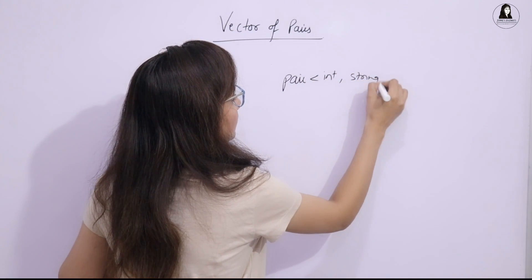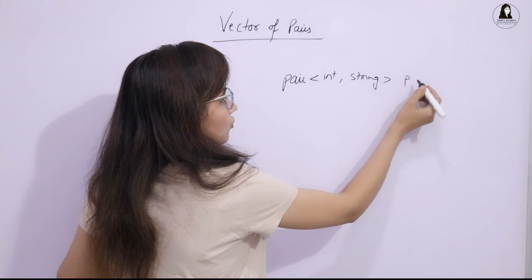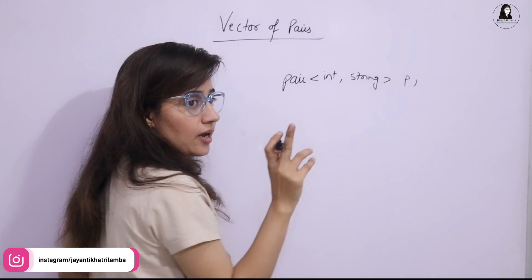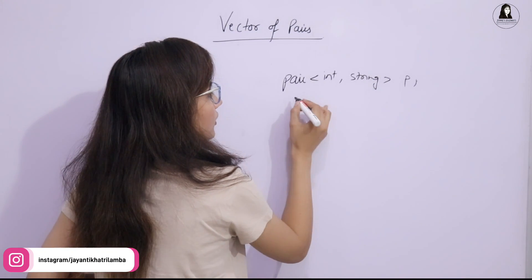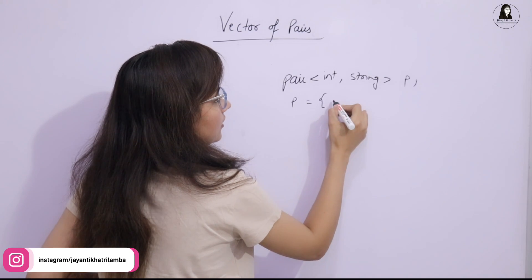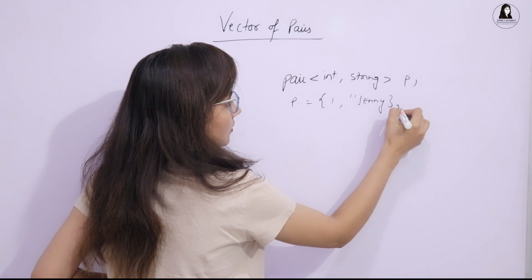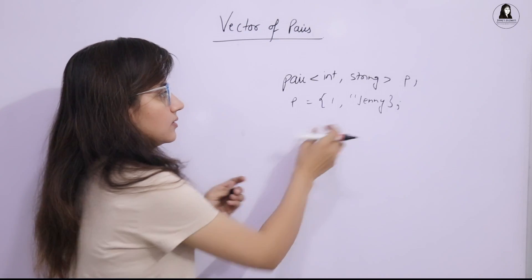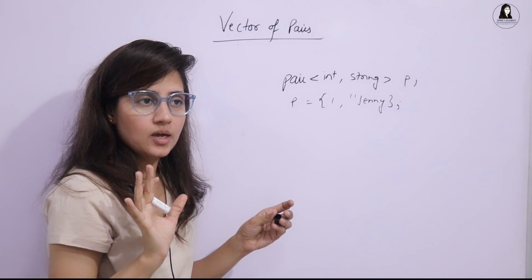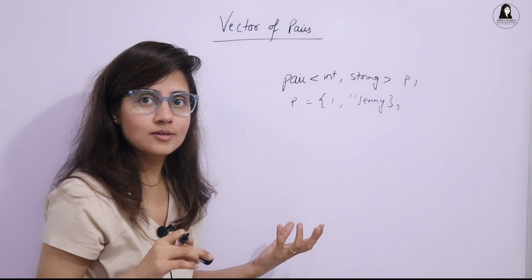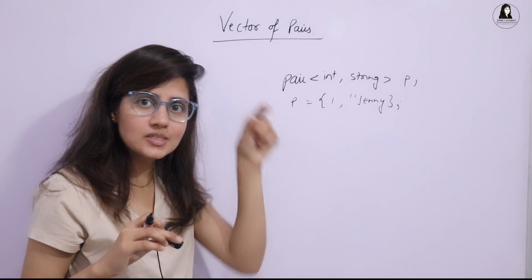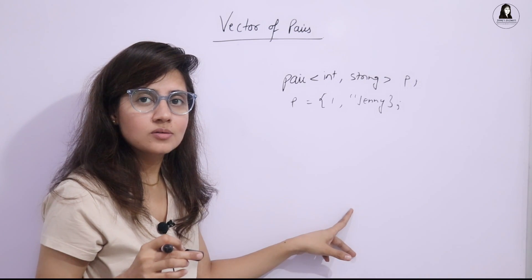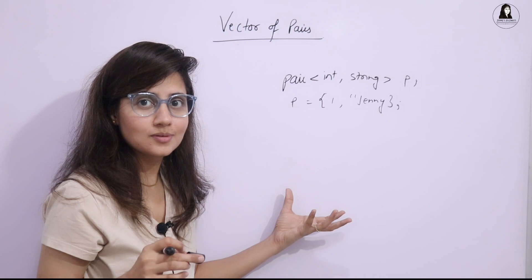One way to initialize a pair is: pair<int, string> p = {1, "Jenny"}. This assigns values to the pair. But now if I have 60 students in my class, storing all their details like name with roll number would need 60 pairs: p1, p2, p3... A better idea is to create a vector of pairs.